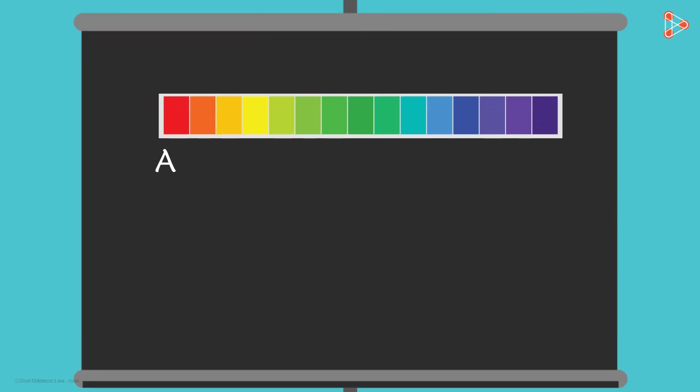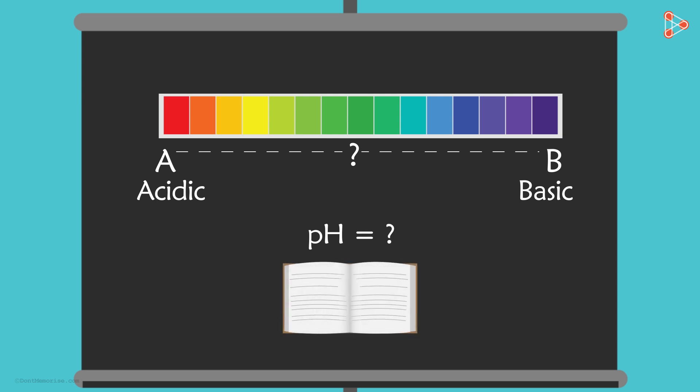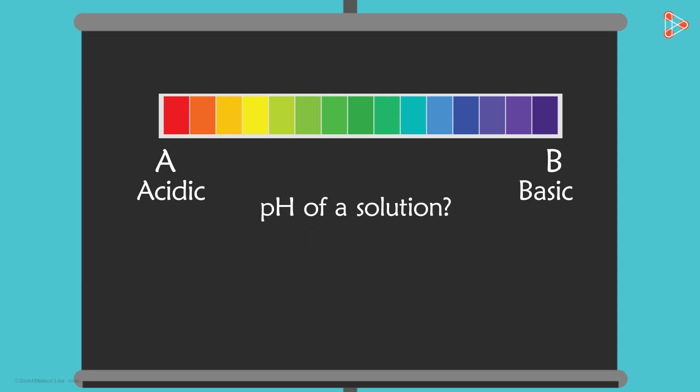A good way to remember this is to think of the first two letters of the English alphabet. A and B. Acidic on the left and basic on the right. And don't forget, we still don't know how the number on the pH scale is calculated. That involves logarithms which we haven't looked at yet. But how is the pH of a solution actually measured in real life? We'll see that in the next video.